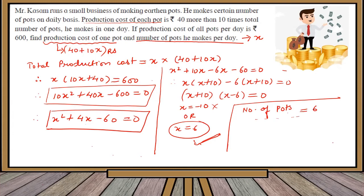Then what would be the production cost of each pot? Cost of each pot was equal to 40 + 10x, so 10 × 6 is 60, 60 + 40, this is equal to ₹100.